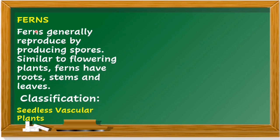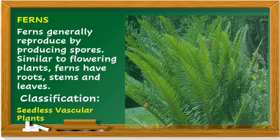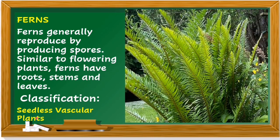Ferns generally reproduce by producing spores. Similar to flowering plants, ferns have roots, stems, and leaves. Their classification is seedless vascular plants.